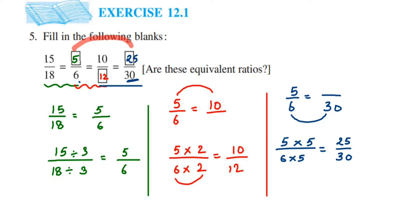Now we have all the answers. They are asking: are these equivalent ratios? Yes! These are given in fractional form, but fractions can be written back as ratios. For example, 5 by 6 written as a ratio is 5 to 6. We can say yes, they are equivalent ratios because the question itself has equal signs between all the fractions, which means they are all equal. I hope this question is clear. If you have any doubts, drop a comment. Thank you so much for watching.